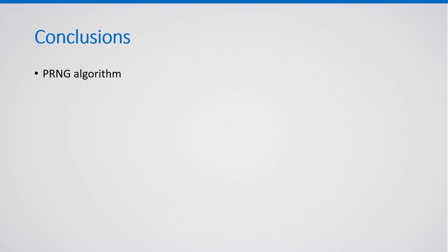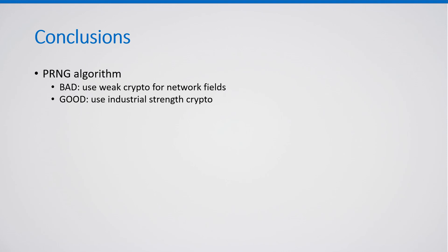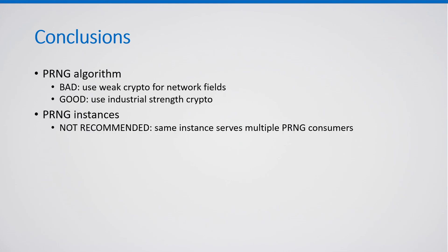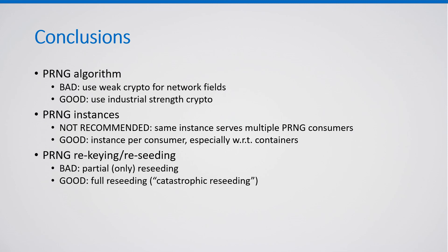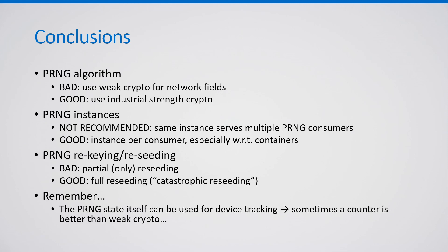To conclude: using weak crypto for network protocol header fields is a bad idea — industrial-strength crypto should be used instead. Using the same PRNG instance for multiple consumers is not recommended; having a PRNG instance per consumer is better, especially with respect to containers. Partial-only reseeding is potentially insecure — the secure procedure is full reseeding. And an interesting outcome of this research is that the PRNG state itself can be used for device tracking, so sometimes a simple counter is better than weak crypto.